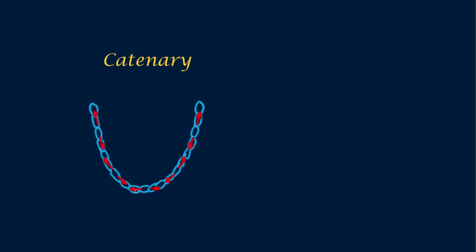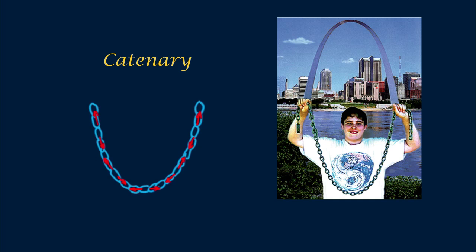I show the tension vectors for five links, each pulled in a direction exactly along the chain at every point. Get the idea? We can extend this idea upside down to an arch. Here's a photo of my grandson Manuel holding a chain with the gateway arch of St. Louis in the background.